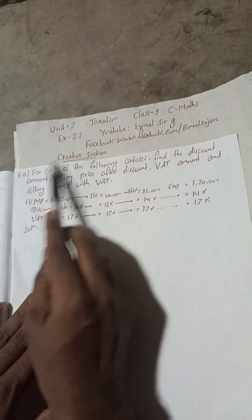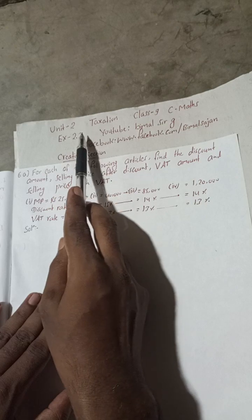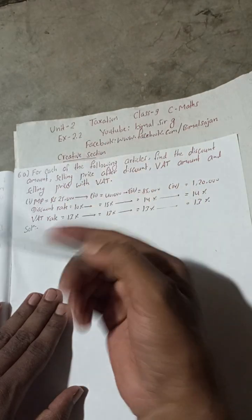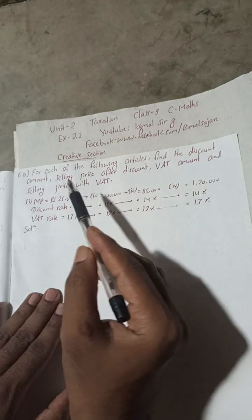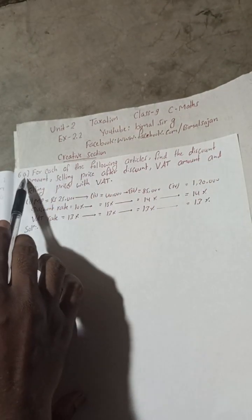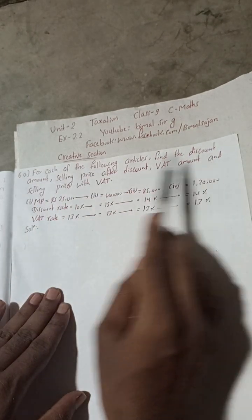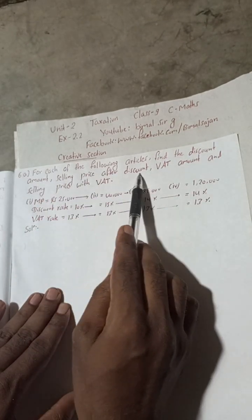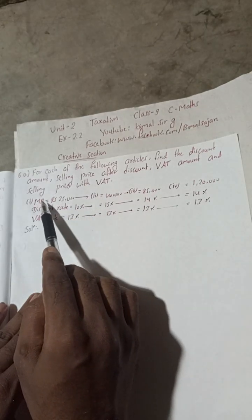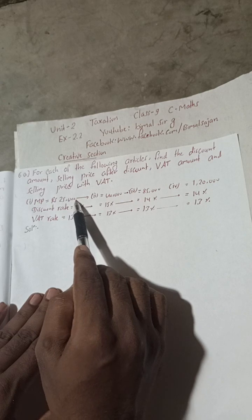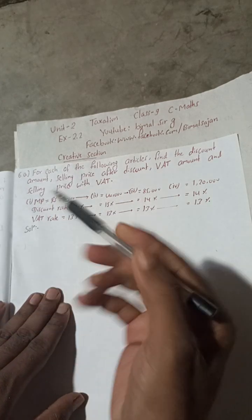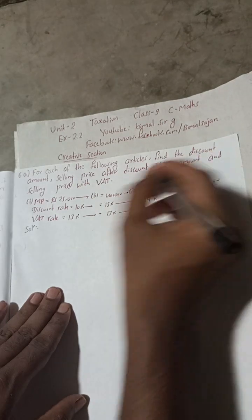So this is 6a. Now this is the creative section 6a: for each of the following articles, find the discount amount, selling price after discount, VAT amount, and selling price with VAT. So number 1: marked price is given 25,000, discount rate 10%, and VAT rate 13%.